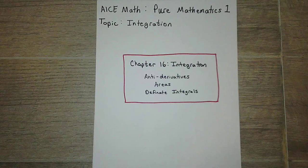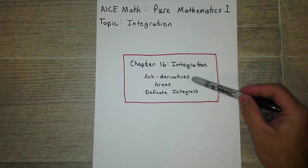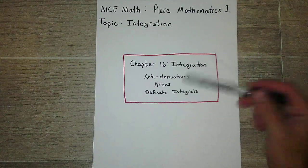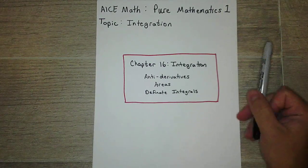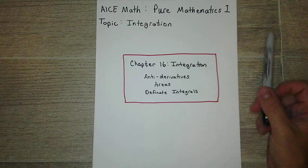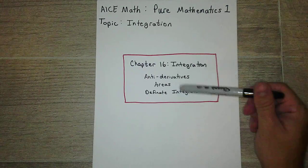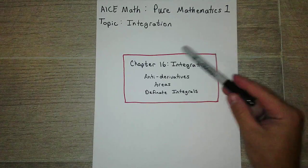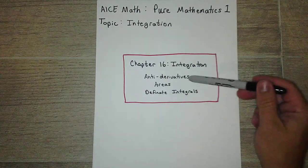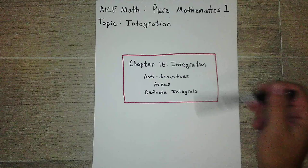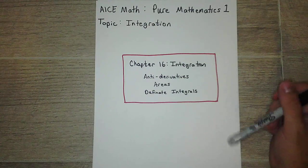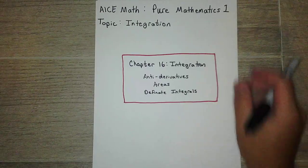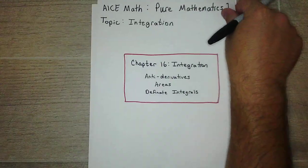Integration has a few uses. One is called the Anti-Derivative. Anti-Derivative is actually another name for Integration, but we use it for basically undoing derivatives. Also, it's used for finding areas and what's called Definite Integrals. So this is all in Chapter 16. These are the applications of Integration. And then Chapter 17 will be its own type of application that we'll look at separately.